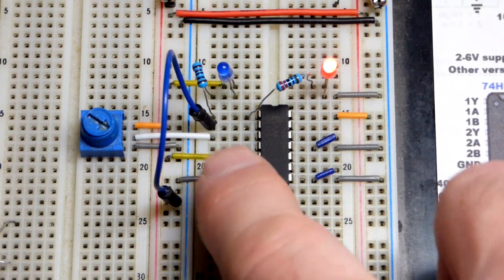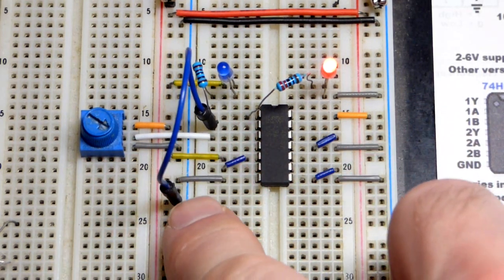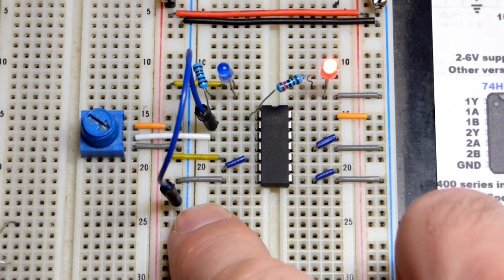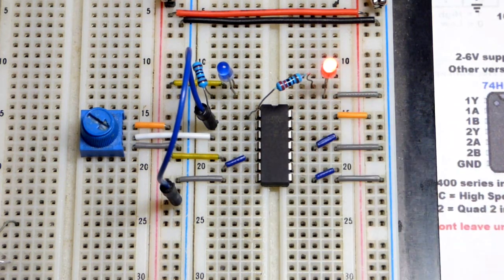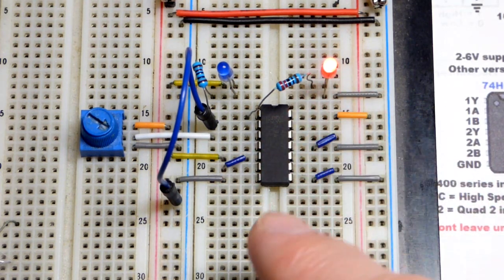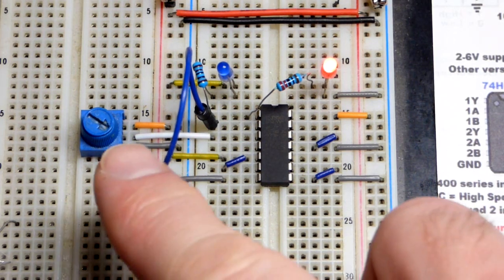We have two inputs here. They're both low, with ground there and ground there. This being a NOR logic gate means that when they're both low, the output's high. It's the opposite of an OR logic gate - it's a NOT OR logic gate.